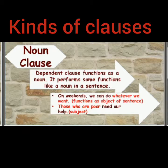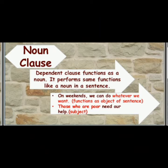Now let's have a look at kinds of clauses. A noun clause performs the work of a noun and can be replaced by a noun. It usually begins with words like that, what, when, where, how, whether, who, whom, why, etc. For example, "on weekends we can do whatever we want" — it functions as an object. "Those who are poor need our help" — here it functions as a subject.